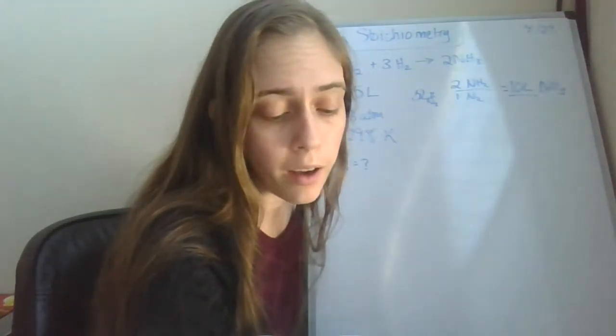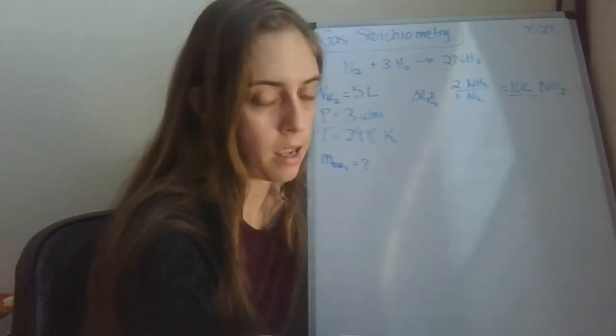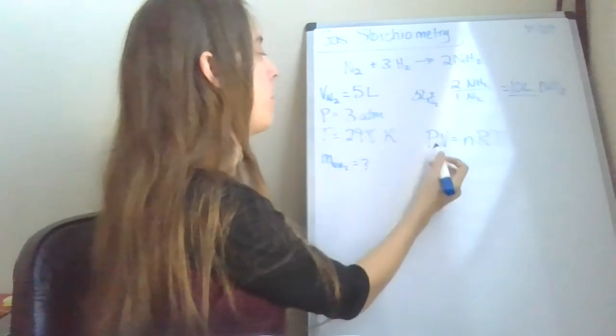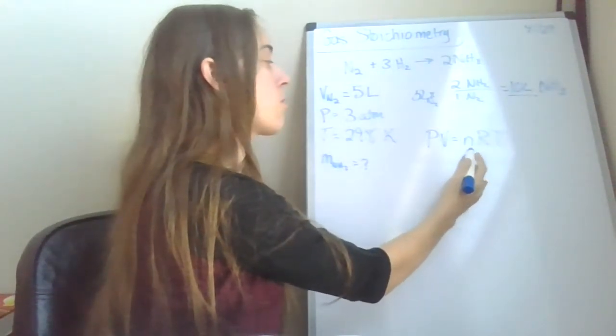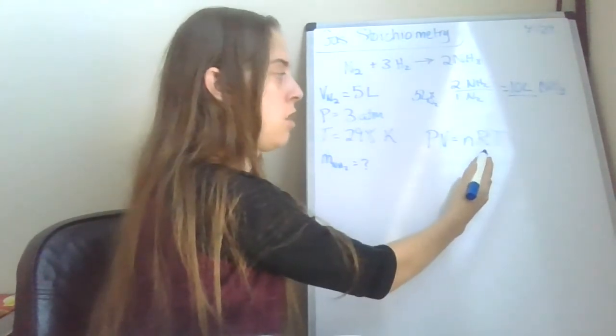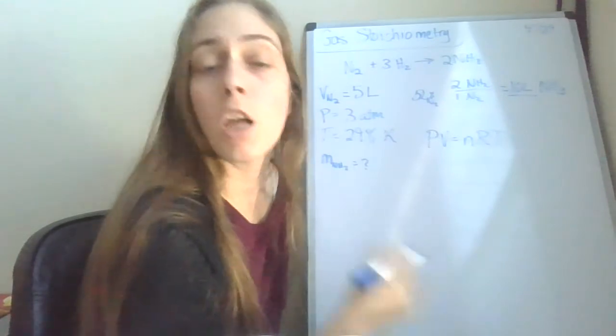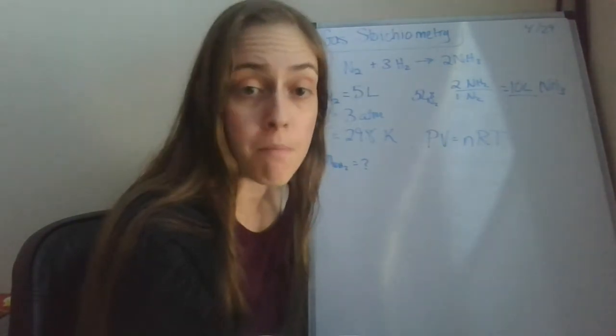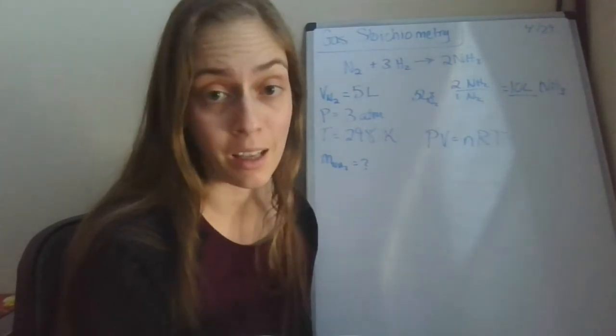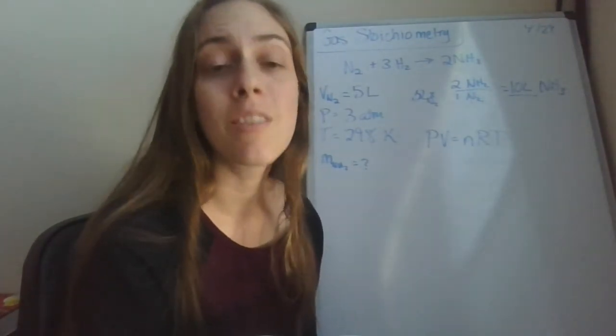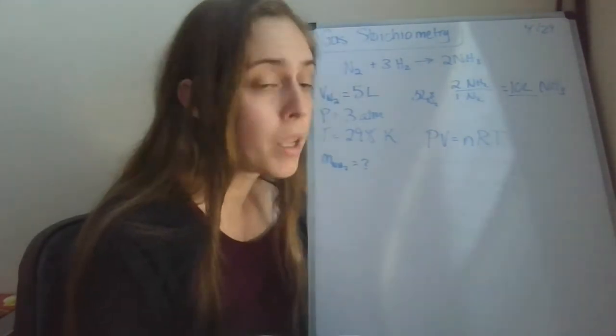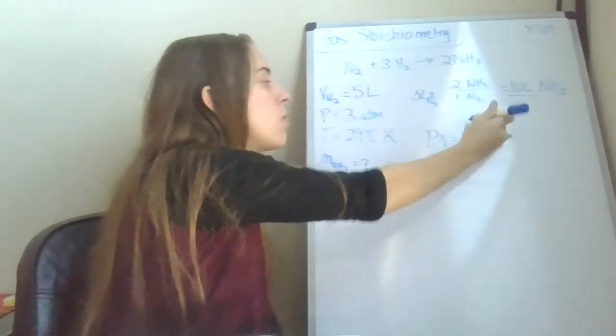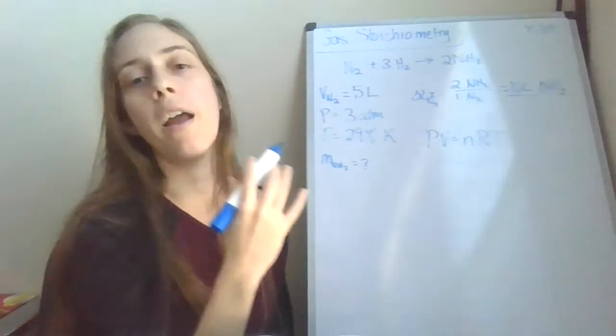Now we need to find the number of moles of ammonia because we can't jump right to mass yet. Our ideal gas law is PV equals NRT. Knowing the pressure, which we do. Knowing the volume, which we just calculated for. Knowing the number of moles, which we don't know. But R is our constant, so we know that. And temperature, we have. So now we can solve for the number of moles. You can't jump right to mass. You've got to take this in steps. This is where most of you get stuck. You want to find one magical equation that will solve the whole thing for you. Sometimes it doesn't work like that. You've got to be able to go through those steps to take it stepwise, one at a time.